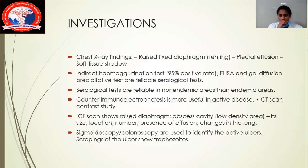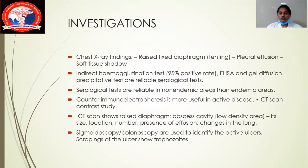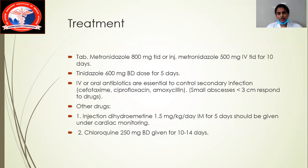Serological tests: indirect hemagglutination test has a 95% positive rate. ELISA and gel diffusion precipitin tests are also reliable serological tests. These are more reliable in non-endemic areas than endemic areas. CT scan shows right diaphragm elevation, abscess cavity with size, location, and number, and right pleural effusion. Sigmoidoscopy or colonoscopy can show active flask-shaped ulcers. Scraping the ulcer for testing reveals trophozoites of Entamoeba histolytica, confirming amoebic liver abscess.